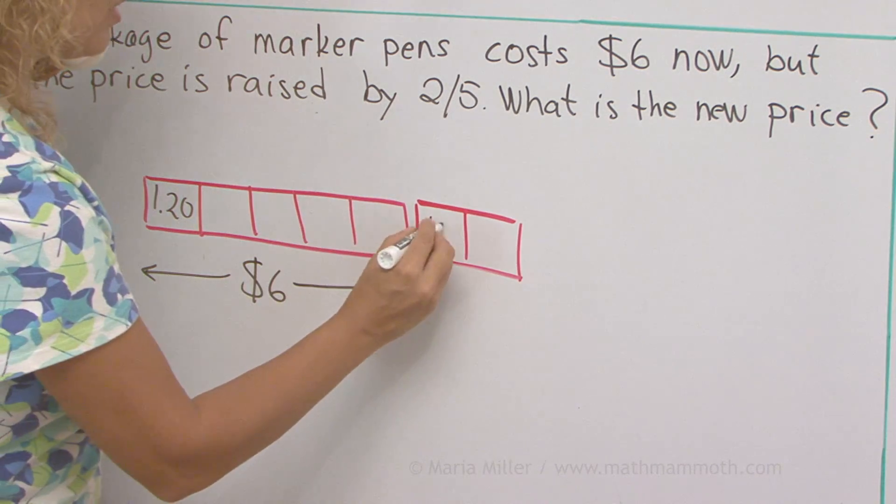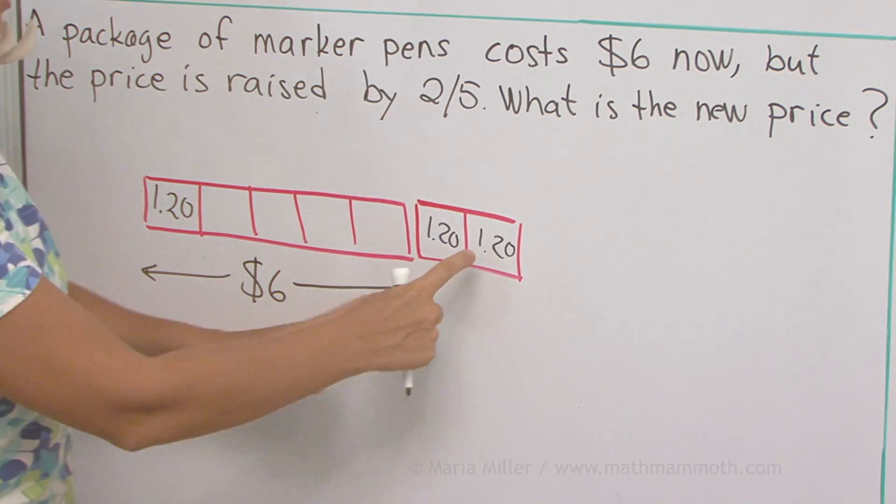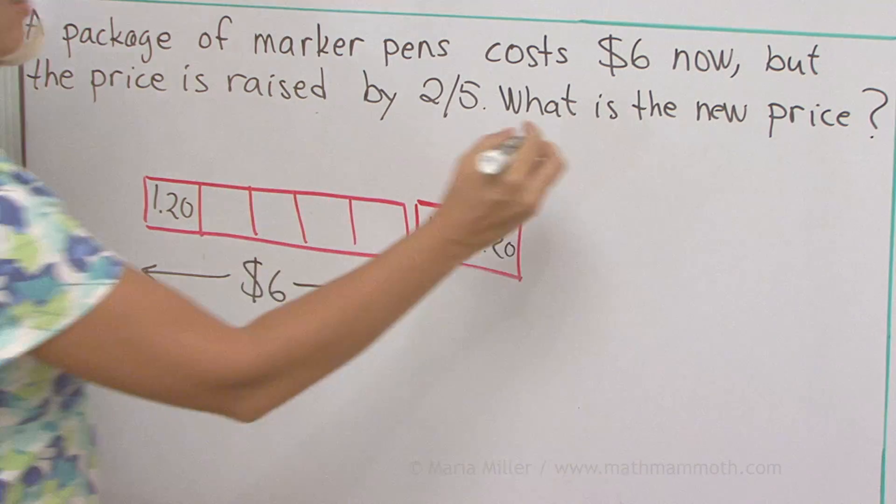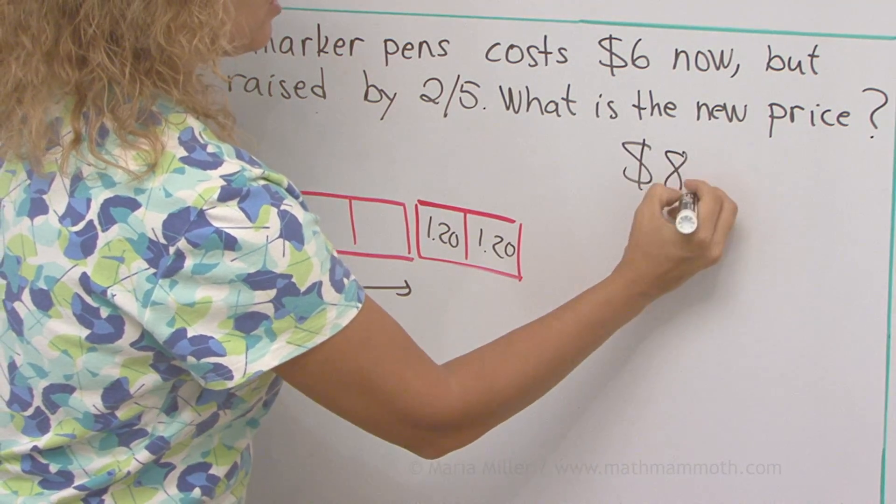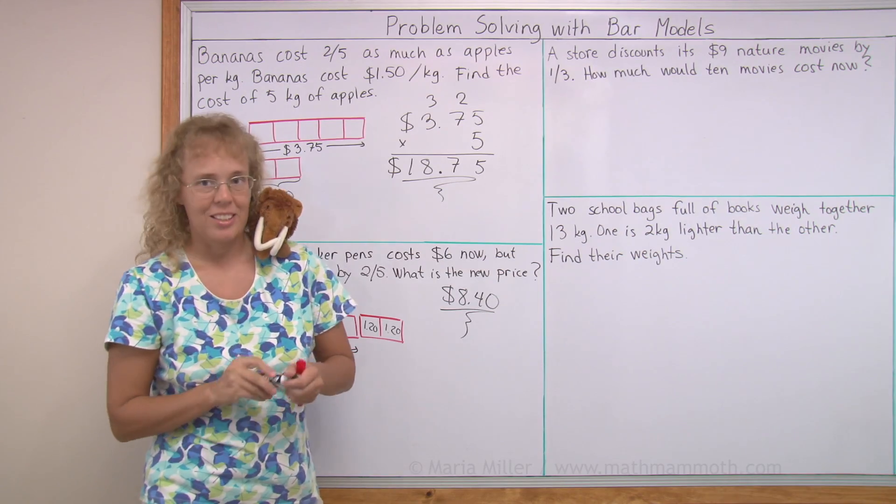And here's $1.20 and $1.20 and so on. So it's $6 and then these two added, $7, $8 and $40. We get $8.40 as the new price. Right, Mathi? Oh, he thinks it's right.